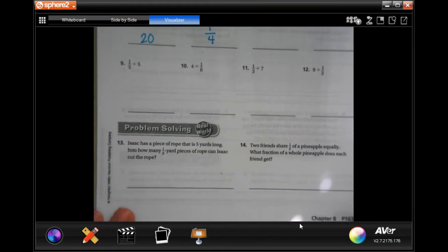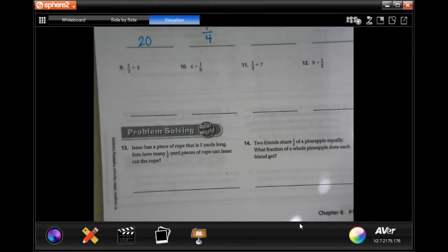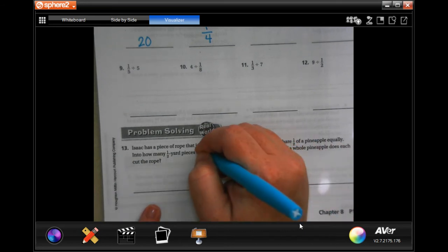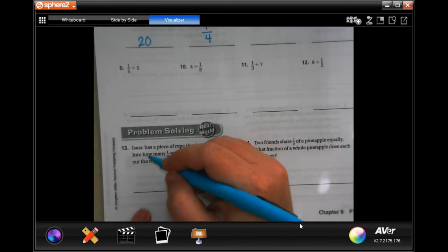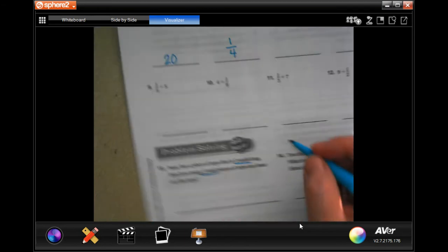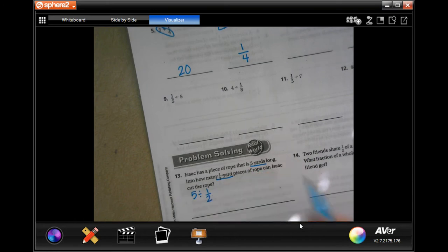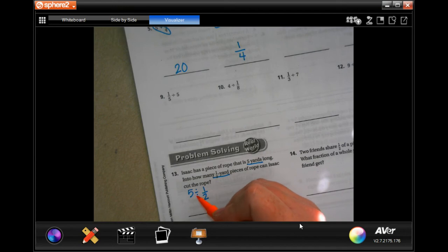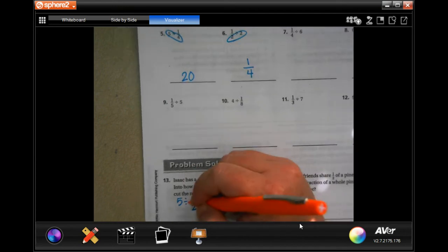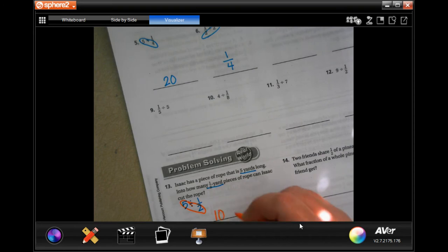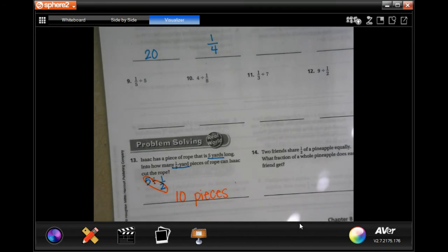We're going to go down, and we're going to do the word problems. Number 13, Isaac has a piece of rope that's 5 yards long. He is cutting them into half-yard pieces. How many pieces? So, 5 divided by 1 half. Whole number divided by a fraction, we're going to get a whole number. I'm going to multiply those two numbers, 10 pieces, done. Not that bad, guys.